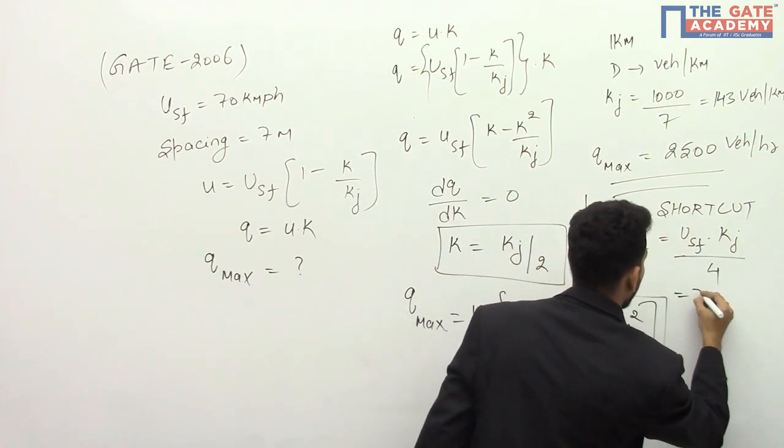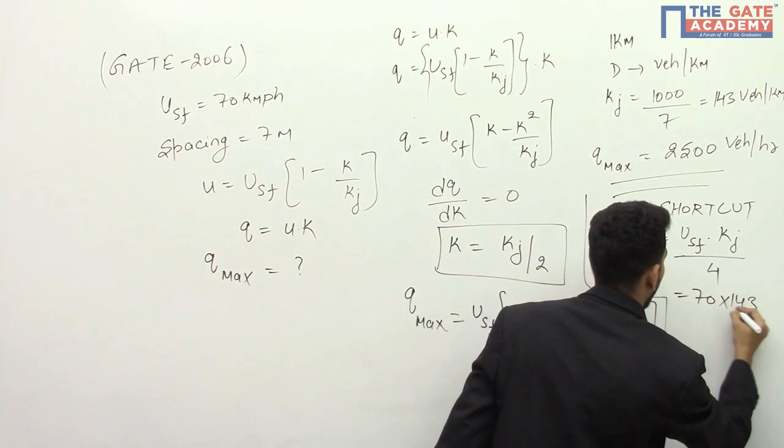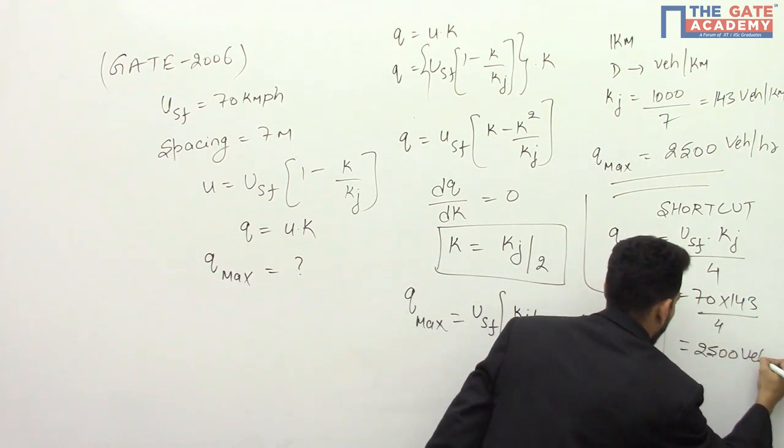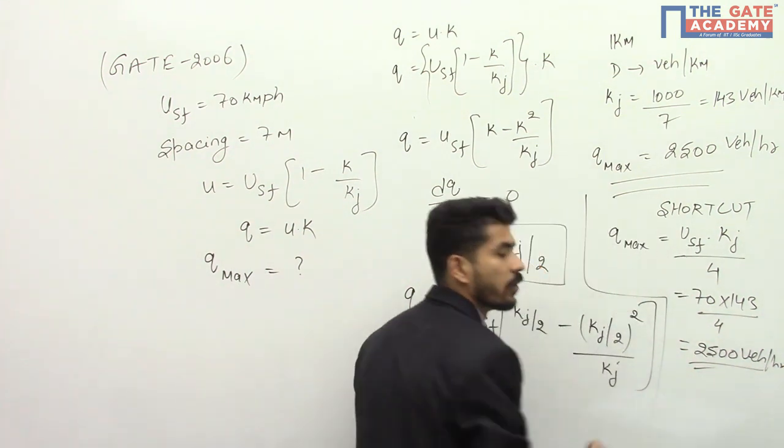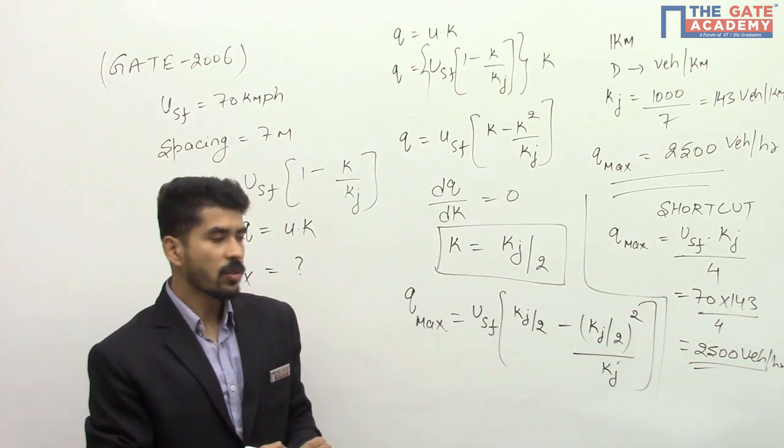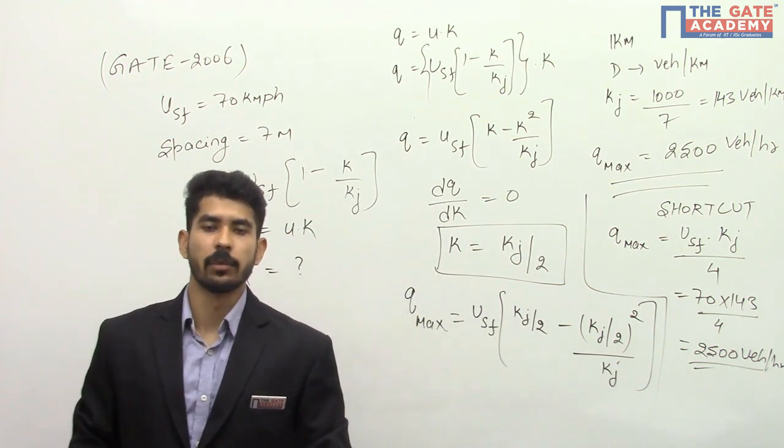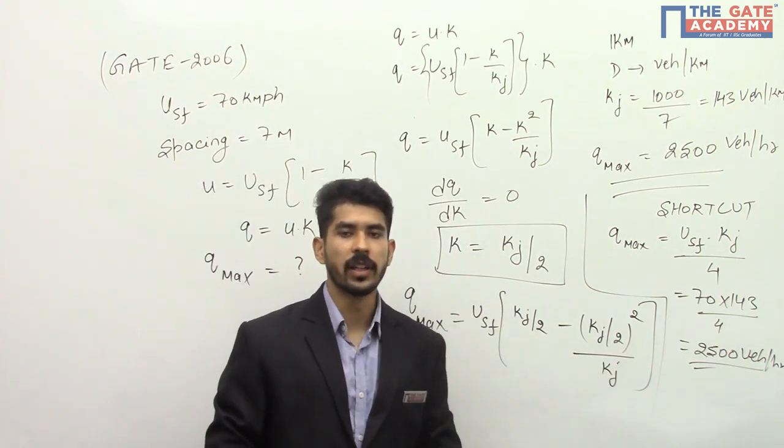So this is equal to usf is 70 into 143 divided by 4 which is equal to 2500 vehicles per hour. So by applying a shortcut you can save a lot of time in the examination. So the answer is 2500 vehicles per hour.